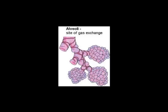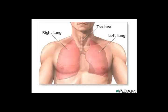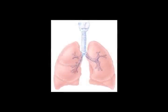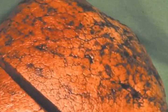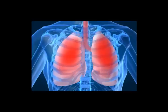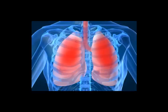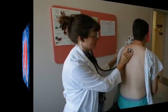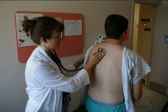Everything else — the bronchioles, bronchi, trachea — is just a tube or passageway to get air to the alveoli. All of this is contained within the lungs. You have two lungs: one on the right, one on the left. The left has two lobes; the right has three lobes. The upper part of the lung is the apex — apex meaning the pointy part. The flatter, broader portion is the base. When you're listening to somebody's lungs at the bases, you're listening down here; when listening to the apices, you're listening up at the top.